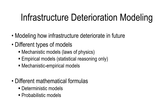One perspective is what type of model we are using philosophically. Are we using a mechanistic model, an empirical model, or a mechanistic-empirical model? Mechanistic models are based on the laws of physics — fundamental, unchangeable laws true no matter where you are. For example, Newton's second law, or in strength of materials, sigma equals E epsilon. When you stretch a material by pulling it from two sides, it's going to stretch. These are mechanistic models.